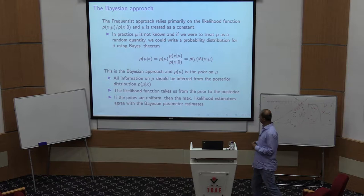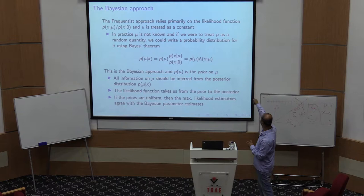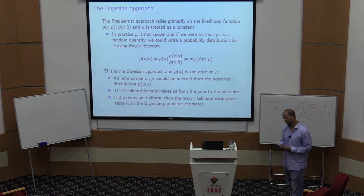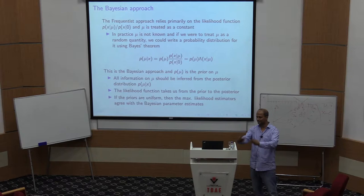Now let's briefly consider an alternative: the Bayesian approach. In the frequentist approach, the likelihood function is p(x|signal) divided by p(x|noise), and the parameter mu is treated as a constant — not a random variable. You find the best estimate for this constant, and that is the frequentist motivation.